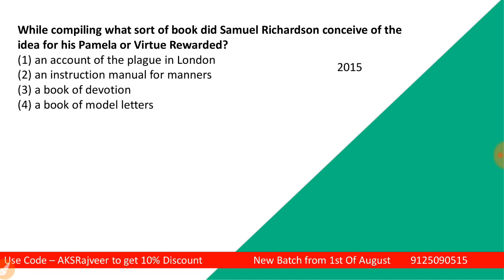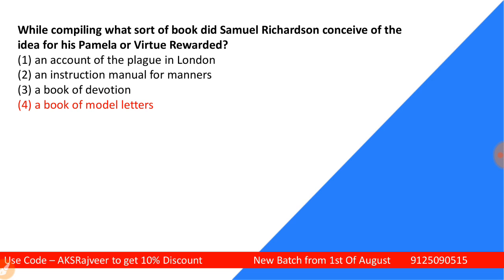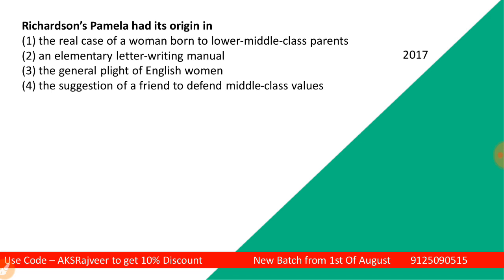While compiling what sort of book did Samuel Richardson conceive of the idea for Pamela or Virtue Rewarded? This was the question part of your UGCnet exam in the year 2015. The options are: an account of the plague in London, an instruction manual for manners, a book of devotion, or a book of model letters. The correct answer is a book of model letters — because this is an epistolary novel, it is a collection of model letters.